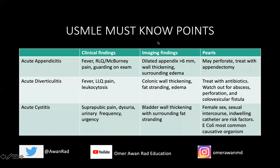The must-know USMLE points: acute appendicitis typically presents with fever and right lower quadrant abdominal pain, sometimes peri-umbilical pain initially that then migrates to McBurney's point — that position in the right lower quadrant between the anterior superior iliac spine and the umbilicus. You can have rebound tenderness and guarding on exam. On imaging, you're looking for that dilated appendix measuring more than six millimeters, wall thickening, surrounding edema. Sometimes you can have a calcified fecalith causing obstruction. Remember it can perforate, so treat as soon as possible with appendectomy.